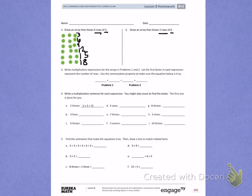Number 3. Write a multiplication expression for the arrays in problems 1 and 2. Let the first factor in each expression represent the number of rows. Use the commutative property to make sure the equation below is true. So in problem 1, I had 6 rows. In each row, I had 3. You solved problem 2 by drawing an array and labeling the amount in each row. Use that information to help you fill in the blanks. Then check that it's true by counting the total number of dots.